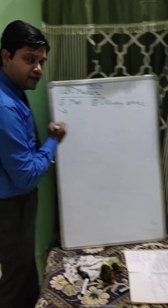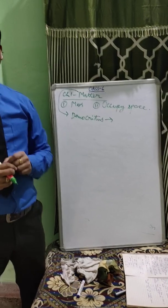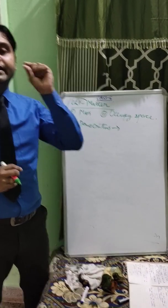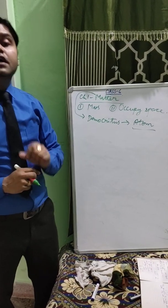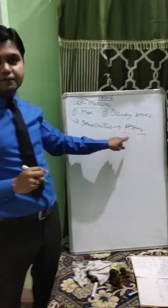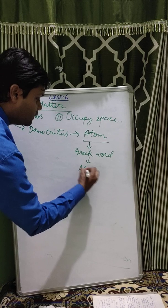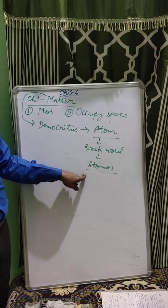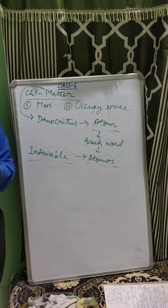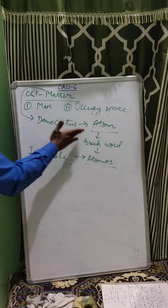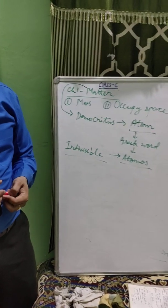According to one scientist — Greek scientist Democritus — matter is consisting of indivisible, very small, tiny particles that are known as atoms. So, atom is the smallest particle of matter which cannot be further subdivided. This atom is derived from a Greek word named Atomos. The meaning of the word Atomos is indivisible — it cannot be further divided. Therefore, atom is the smallest indivisible particle by which matter is made up of.